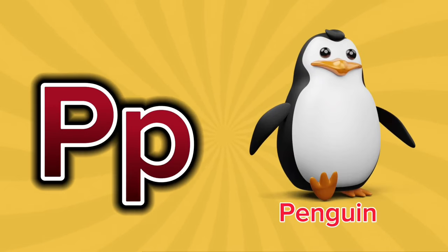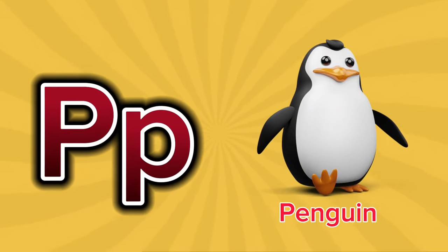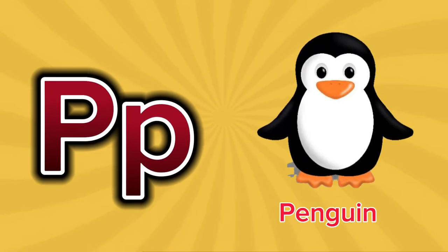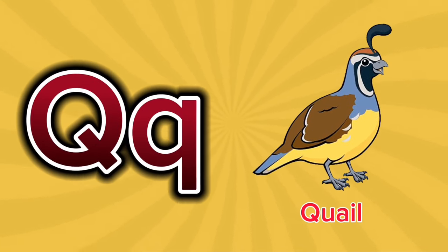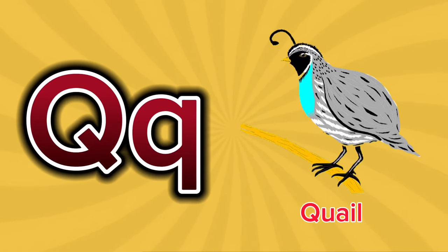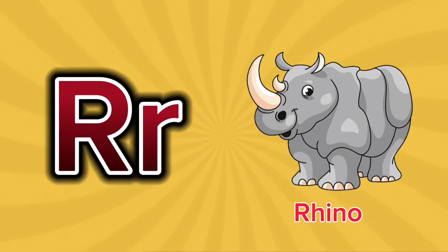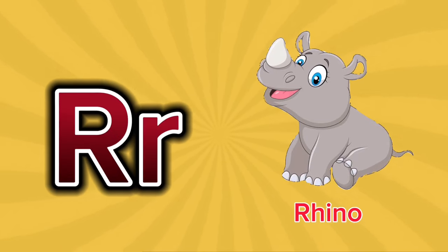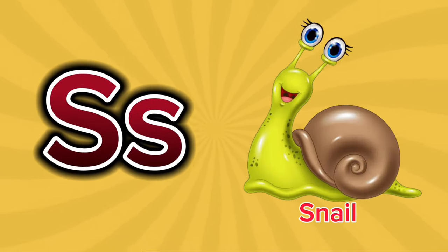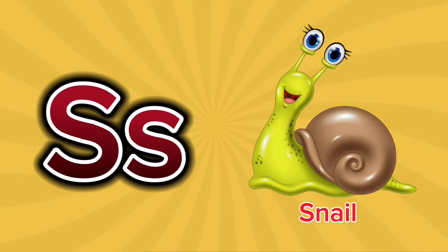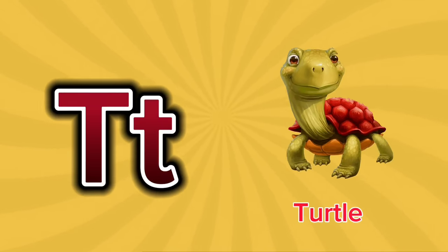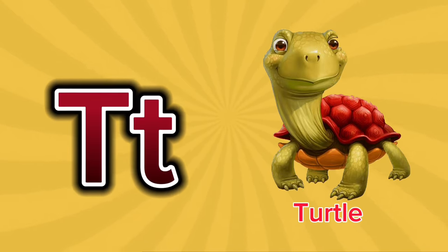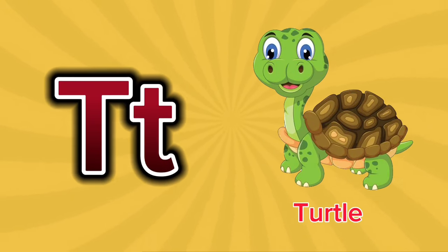P is for Penguin. P-P-P-Penguin. Q is for Quail. Q-Q-Q-Quail. Q is for Quail. Q-Q-Q. R is for Rhino. R-R-Rhino. R is for Rhino. R-R-R. S is for Snail. S-S-Snail. S is for Snail. S-S-S. T is for Turtle. T-T-T-Turtle. T is for Turtle. T-T-T.